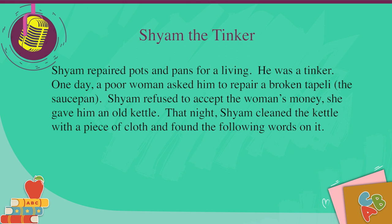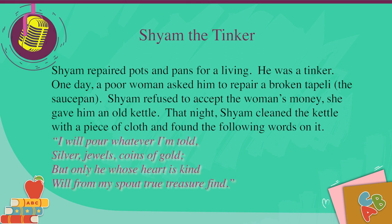Shyam repaired pots and pans for a living. He was a tinker. One day, a poor woman asked him to repair a broken utensil. She gave him an old kettle. That night, Shyam cleaned the kettle with a piece of cloth and found the following words on it: 'I will pour whatever I am told. Silver dwells coins of gold. But only he whose heart is kind, will, from my spout, true treasure find.'